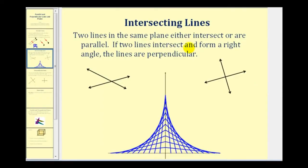Two lines in the same plane either intersect or they are parallel. Here are two examples of lines in the same plane that intersect. Notice they intersect in a single point.